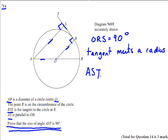AST, the angle we have to prove that's 90, is equal to ORS and they're both 90 degrees. So AST is equal to ORS.